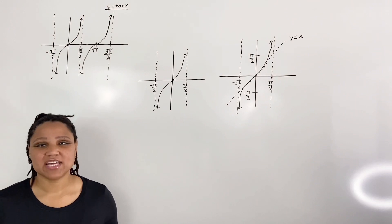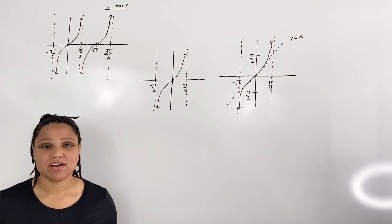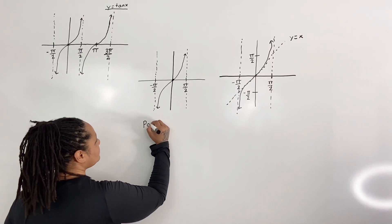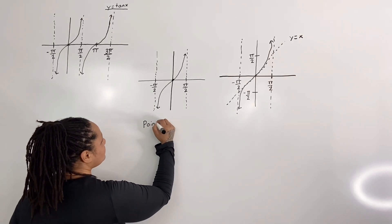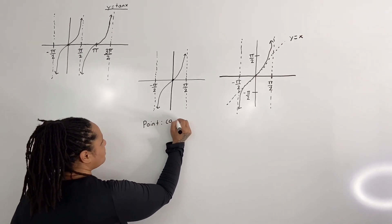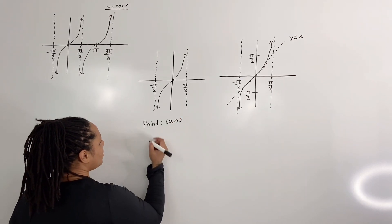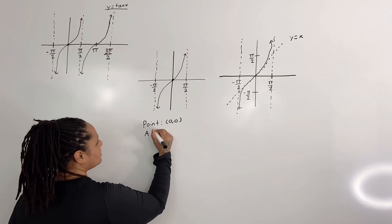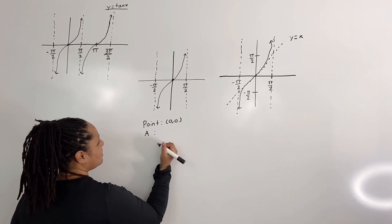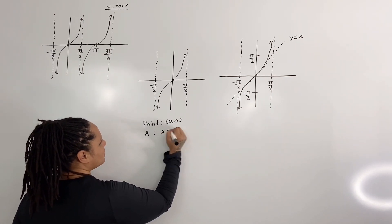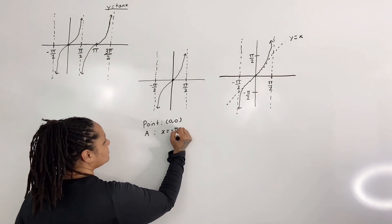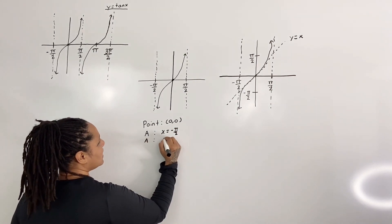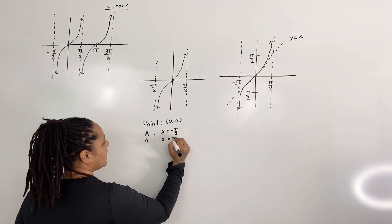Let's write our key locations for the restricted graph of tangent. We have a point at zero zero. We have an asymptote at x equal negative pi over two, and we have another asymptote at x equal pi over two.